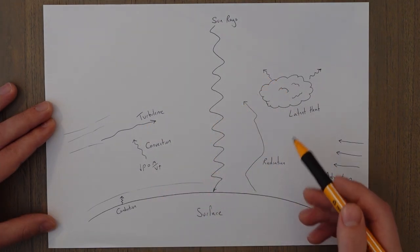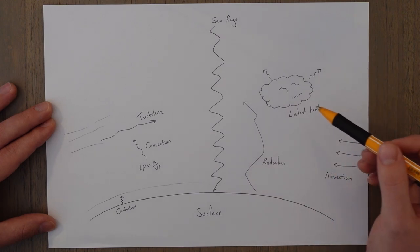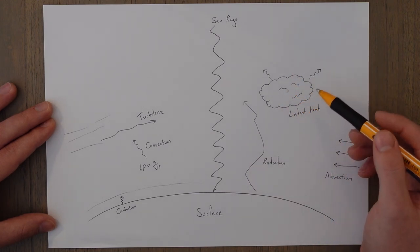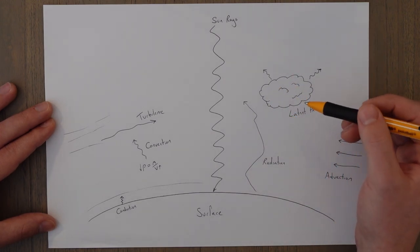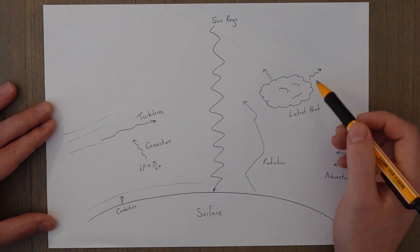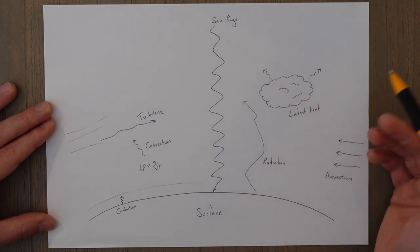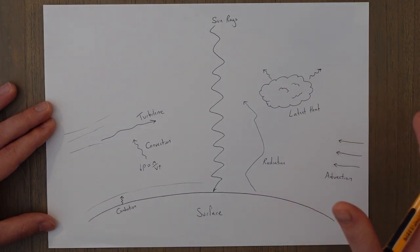As the air rises it will eventually cool down and start to condense and form clouds. When it condenses it actually releases energy. It gives off heat energy which we call latent heat.